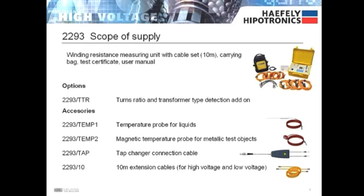The base scope of supply includes the 2293 measuring unit, a complete 10 meter length cable set, cable carrying bag, test certificate, and user manual. Optional accessories include the newly released turns ratio and transformer type detection add-on, as well as temperature probes for liquids and solids, the tap changer control cable, and 10 meter extension cables.